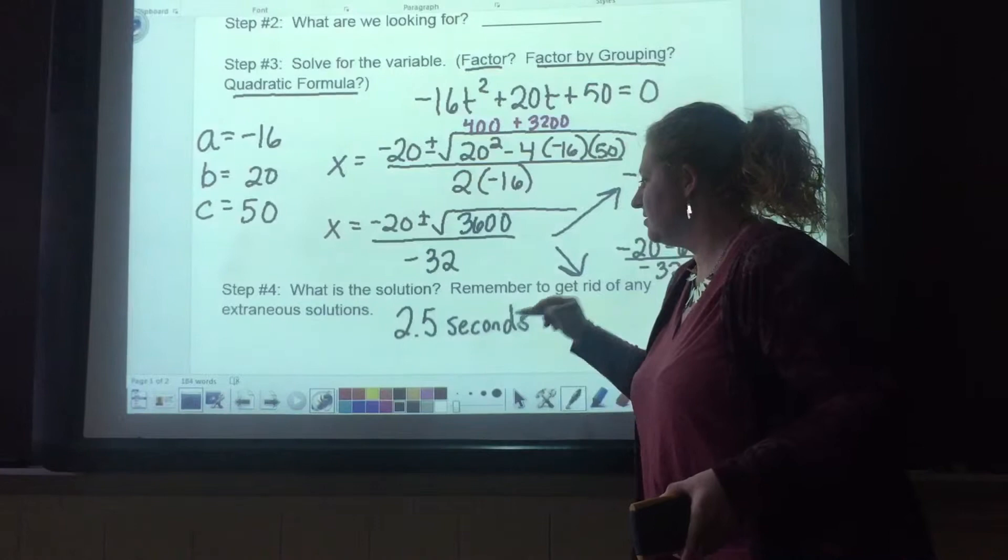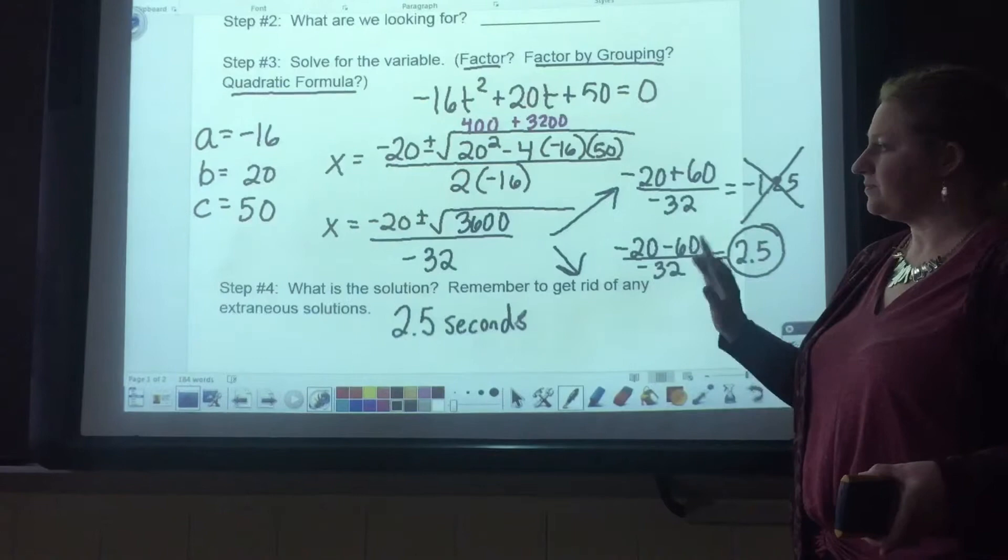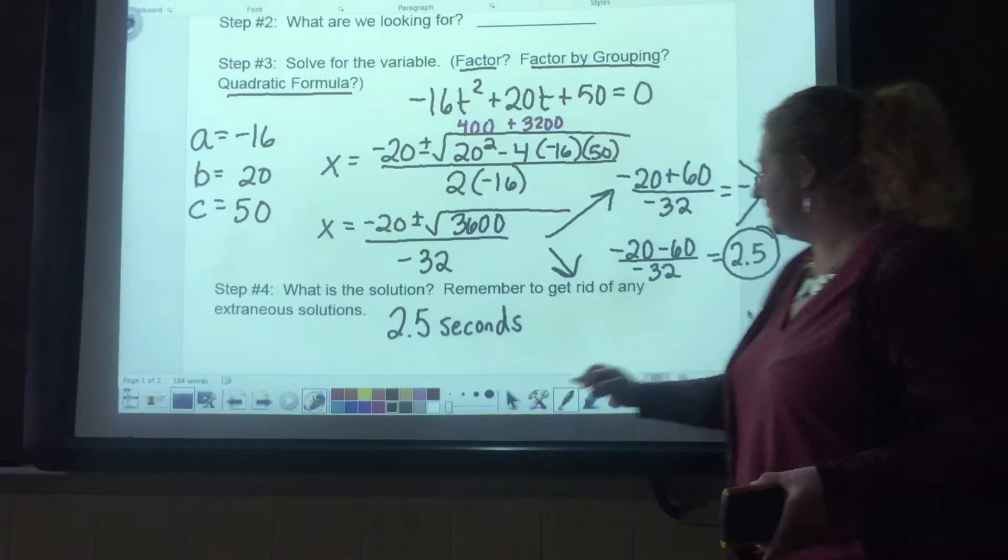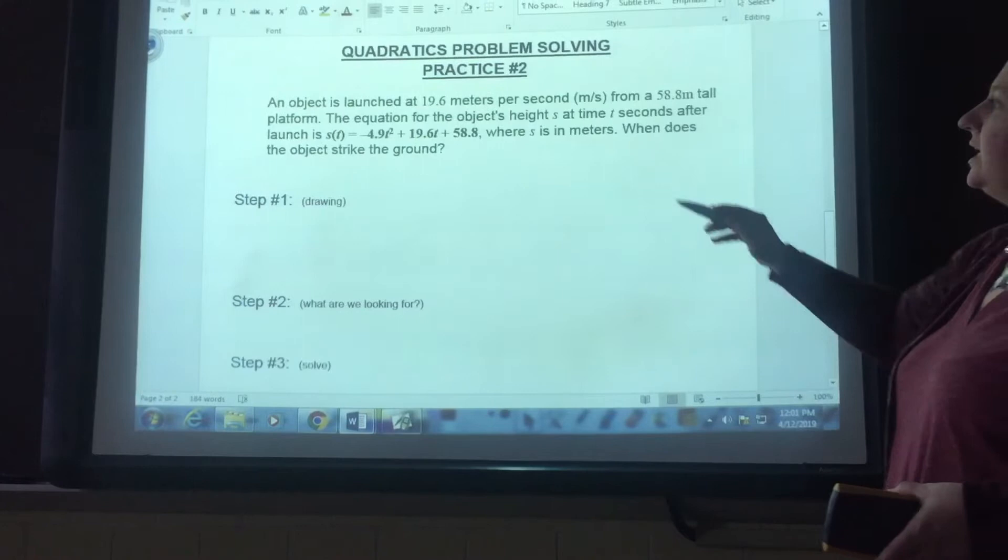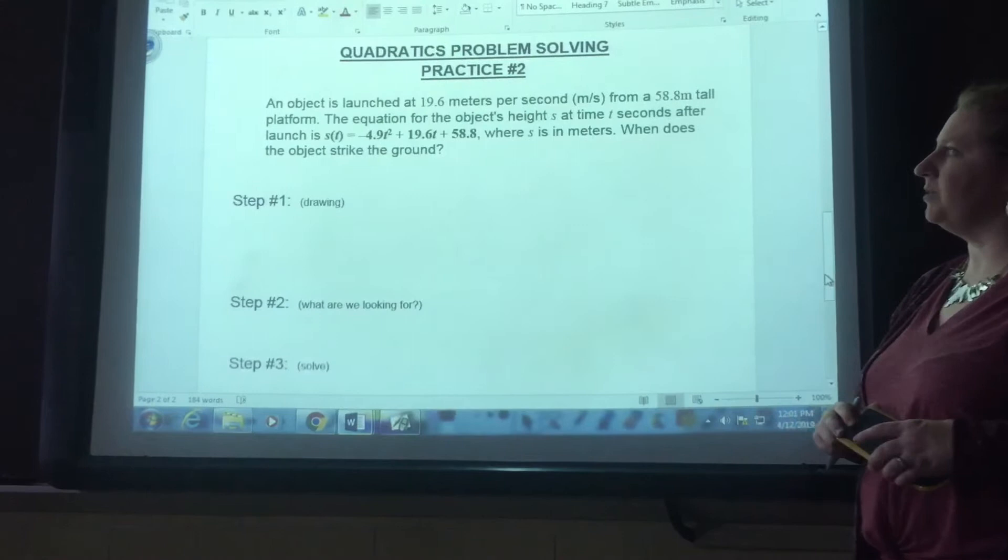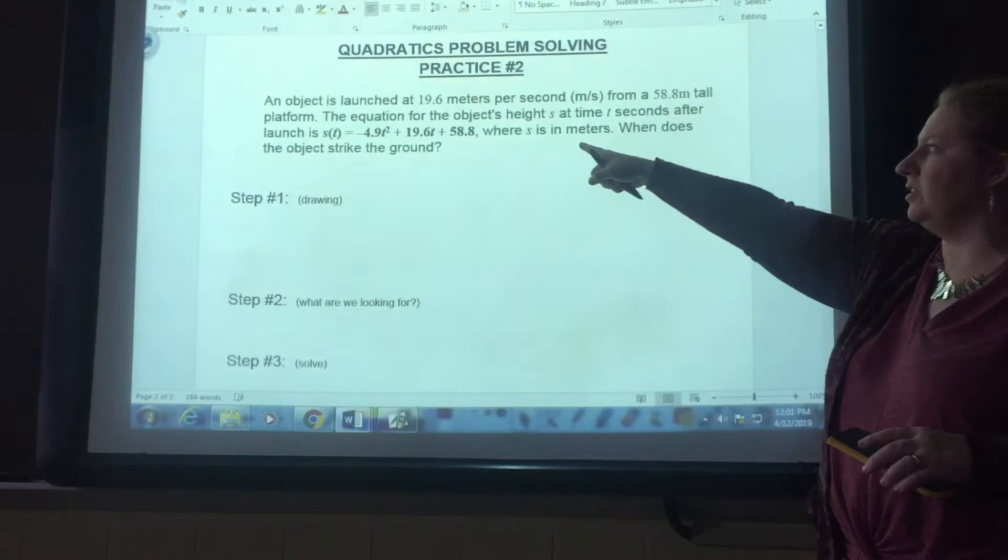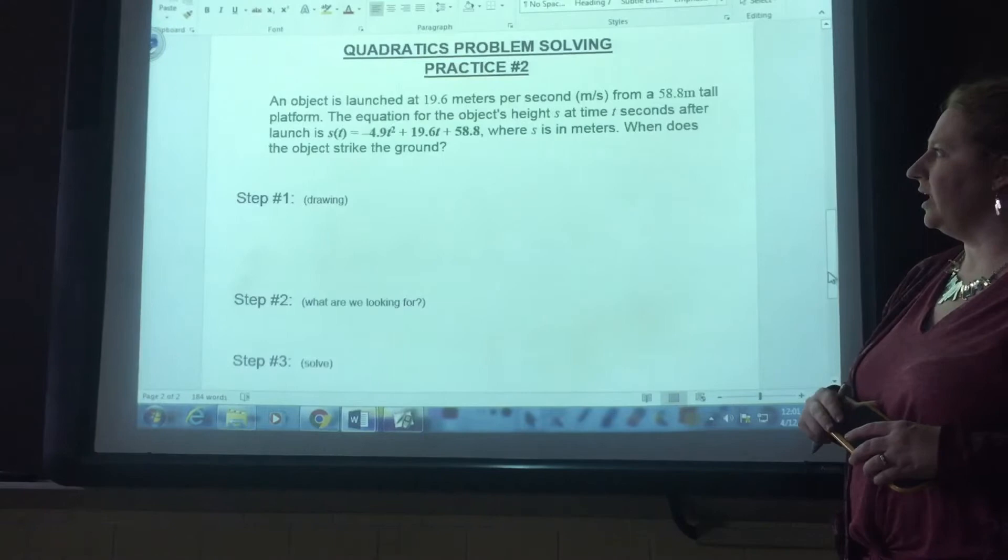All right. So the plan of action now is for you to flip over your paper. You're going to do the practice problem. I'm going to get it set up for you, and then you're going to work on your own. The sub will reveal what the answer is. Practice number two, flipping over our papers. An object is launched at 19.6 meters per second from a 58.8 meter tall platform. The equation for the object's height, S, at time T seconds after the launch is the following equation, where S is in meters. When does the object strike the ground?